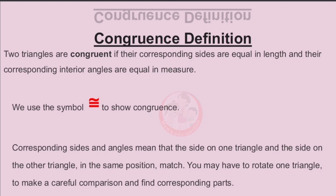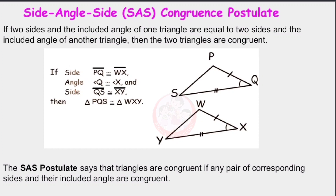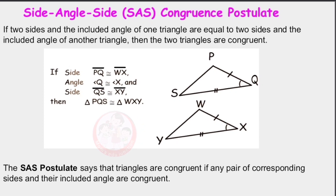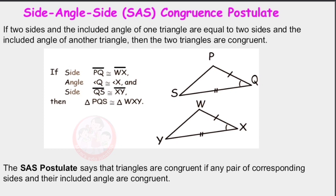The symbol of two congruent triangles is shown on the screen. Our first congruence rule is Side Angle Side. In the SAS rule, if any pair of corresponding sides of two triangles and their included angles are congruent, then we say both triangles are congruent to each other. In the screen, there are two triangles named PQS and XYW. Side PQ is congruent to WX, side QS is congruent to XY, and included angle Q equals angle X, so triangle PQS is congruent to triangle WXY.